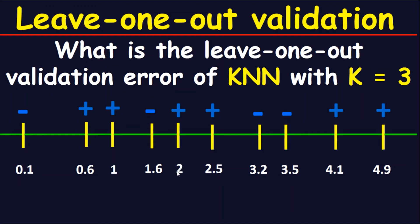For point 2, the closest three points are this point, this point, and this point: positive, positive, positive. The majority is positive — we have two positive signs and only one negative sign — and the original point is also positive, so this point is not an error. For 2.5, the closest three points are: negative, positive, negative. The majority is negative but this point is positive, so this is an error.